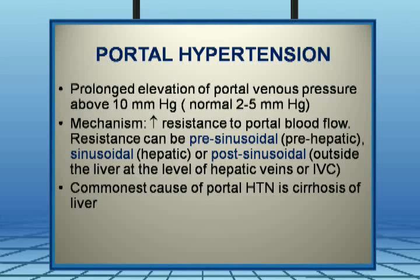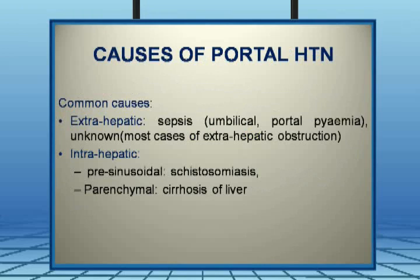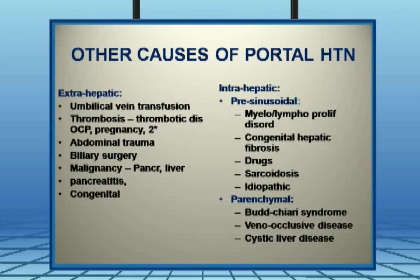Portal hypertension can be classified as pre-hepatic, hepatic (pre-sinusoidal, sinusoidal, post-sinusoidal), or post-hepatic. Cirrhosis is one of the most common causes. Extra-hepatic causes include umbilical sepsis and portal pyemia, while many unknown causes are due to extra-hepatic obstruction. Intra-hepatic pre-sinusoidal causes include schistosomiasis, more common in Gulf countries, and parenchymal cirrhosis of the liver.